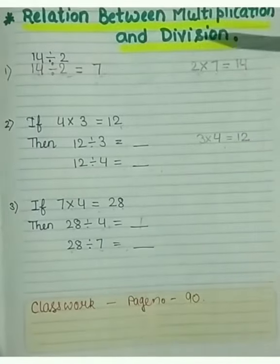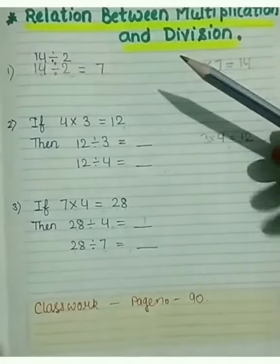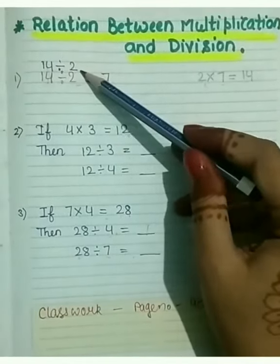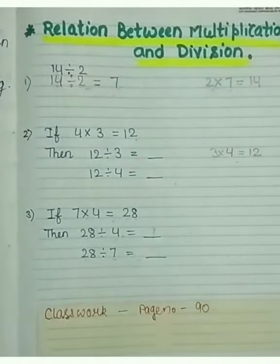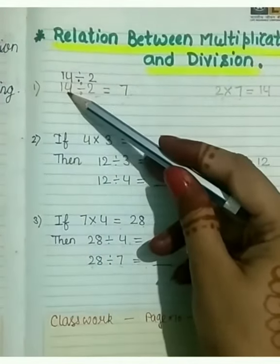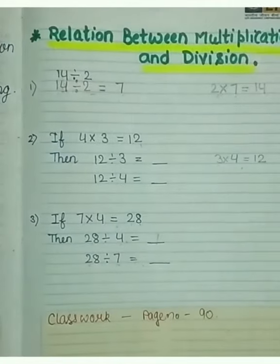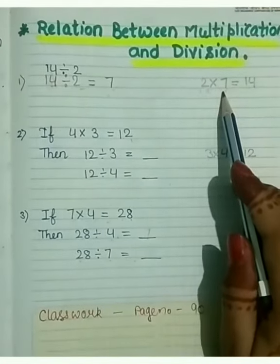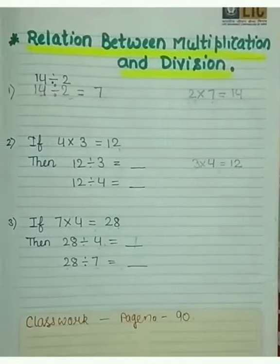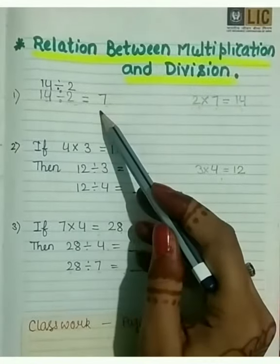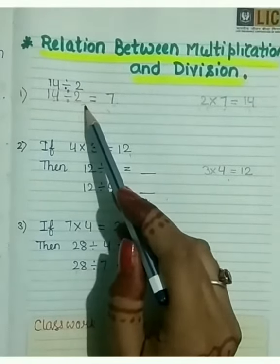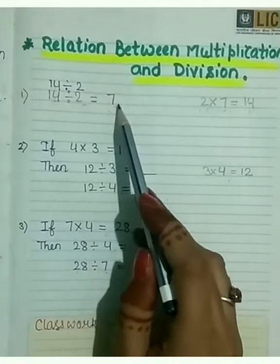So use multiplication table of number to solve the question based on division. For example, 14 divided by 2. Here count the table of 2 and see in how many times the number 14 comes. Here we counted 2 seven times. 2 sevens are 14. Means 14 will be shared in 7 groups. If 14 is divided by 2, 14 divided by 2 equals 7.